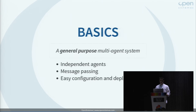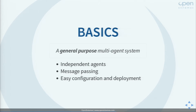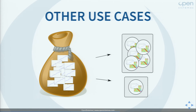This is OSBrain: a general-purpose multi-agent system written in Python. It implements independent agents that run and communicate with each other using message passing, providing an easy configuration and deployment method. When I say general purpose, I mean you can use this for many other things — logistics, transportation, or even military and defense applications. In our case we also use it for distributed computing, distributing agents across machines to run backtests, build correlation matrices, calculate indicators, and generate optimized portfolios.